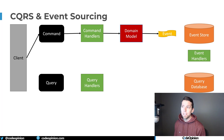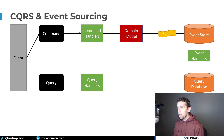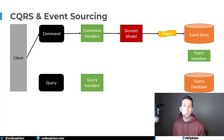If that succeeds, we're going to generate an event, and that event is going to be persisted to an event store. That's the first part of our command side: creating a command, handling it, passing it to our domain model to make sure it's valid, and if it is, deriving and generating an event from that which we persist to our event store.